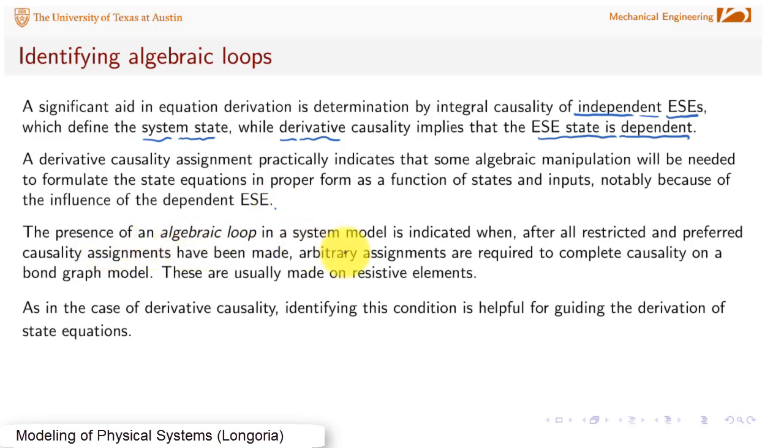When there's an algebraic loop in a system, we can see that also in the causality assignment. An algebraic loop arises when after you've already assigned all the causality to energy storage elements, there are still some arbitrary assignments to be made. These are different from derivative causalities. Most of the time you'll find it's because of resistive elements. You can identify this condition before you start deriving equations.